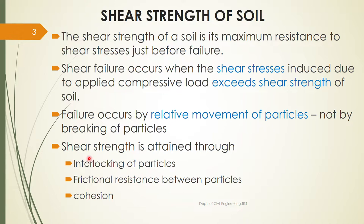The third factor is cohesion — the force of attraction between soil particles. Out of these three factors, it is very difficult to measure the effect of interlocking of particles, so we mostly talk about the frictional resistance between particles and cohesion. Frictional resistance is expressed in terms of the angle of friction φ, and together with cohesion c, these are used for expressing shear strength. c and φ are known as the shear parameters.